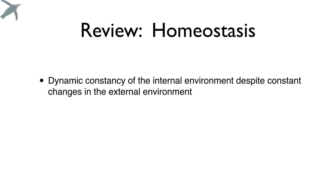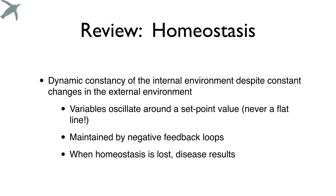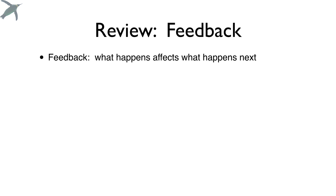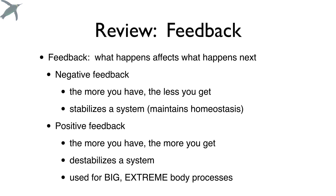In review: homeostasis is a dynamic constancy of the internal environment — something constantly oscillating around a set point value. There is never a flat line, unless you're dead. This is maintained by negative feedback loops. When homeostasis is lost, the result is disease. Feedback simply means what happens affects what happens next. In negative feedback, the more you have, the less you get — that maintains homeostasis. In positive feedback, the more you have, the more you get — that is destabilizing and is used for big and extreme body processes.